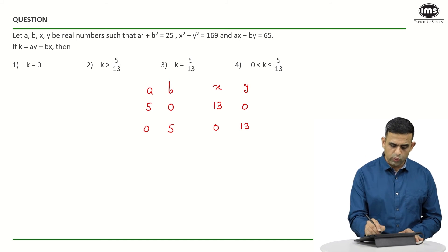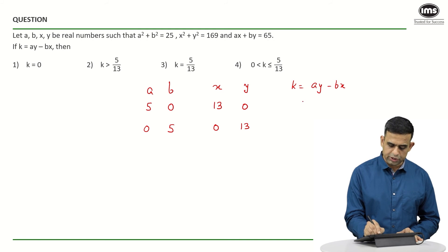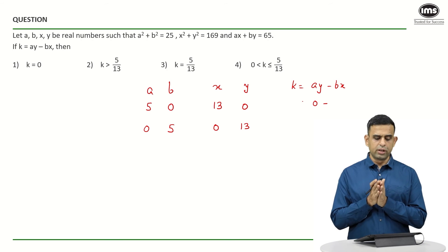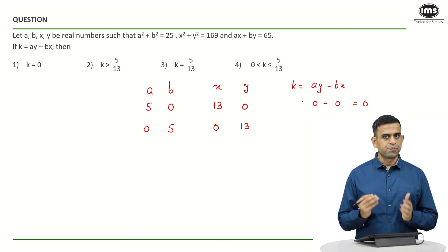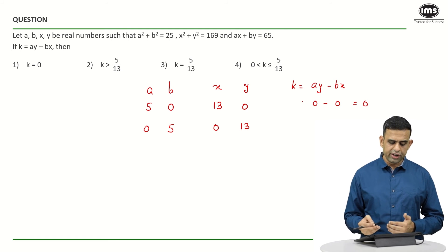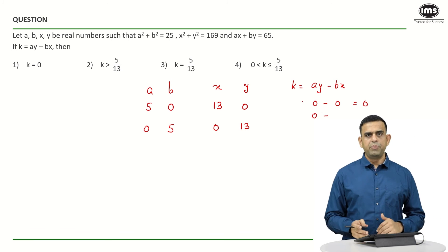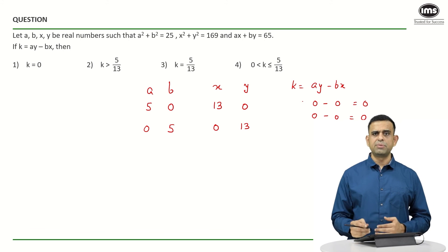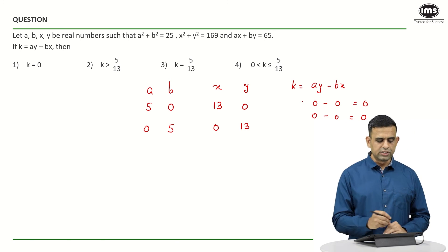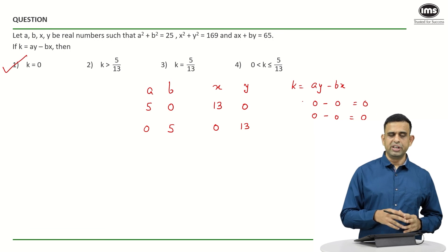In case 1 (a=5, b=0, x=13, y=0): k = ay − bx = 5×0 − 0×13 = 0 − 0 = 0. In case 2 (a=0, b=5, x=0, y=13): k = ay − bx = 0×13 − 5×0 = 0 − 0 = 0. Whatever case you take, the value of k turns out to be 0, confirming option number 1. The first approach was more structured, but this hit-and-trial method is a slightly faster way to solve the problem.